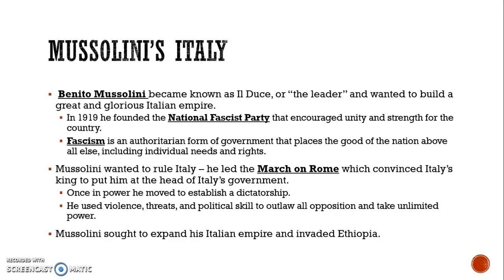Benito Mussolini became known as Il Duce, or "the leader," and wanted to build a great and glorious Italian state. In 1919, he founded the National Fascist Party that encouraged unity and strength for the country. Fascism is an authoritarian form of government that places the good of the nation above everything else, including individual needs and rights. Mussolini led the March on Rome following World War I, which convinced Italy's king to appoint him as head of Italy's government. Once in power, he established a dictatorship using violence, threats, and political skill to outlaw all opposition and take unlimited power. After becoming dictator, he sought to expand the Italian Empire by invading and taking over Ethiopia.